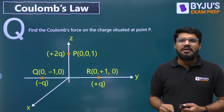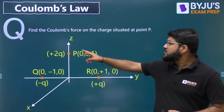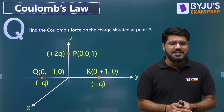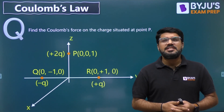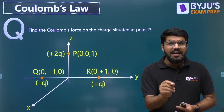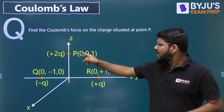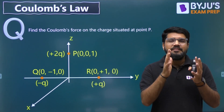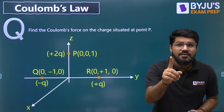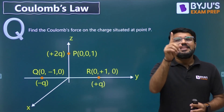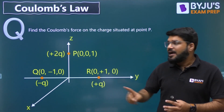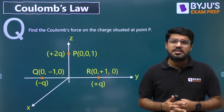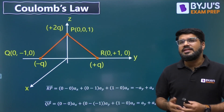The question says: find the Coulomb's force on the charge situated at point P. Here I will also teach you what is superposition. As per the principle of superposition, the net force acting on the charge at point P is going to be the vector sum of the forces applied by the charge at R and the charge at Q. So now let us apply this superposition principle to this particular question and start solving it.